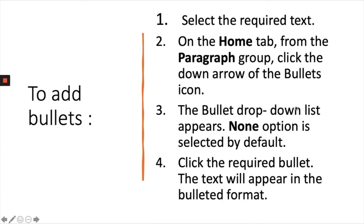To add bullets, select the required text. On the Home tab, from the Paragraph group, click the down arrow of the Bullets icon. The bullet drop-down list appears. The None option is selected by default. Click the required bullet, and the text will appear in the bulleted format.